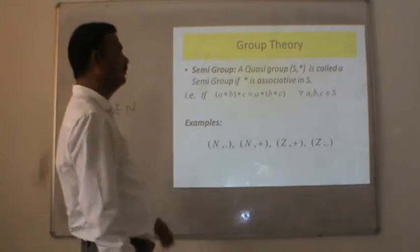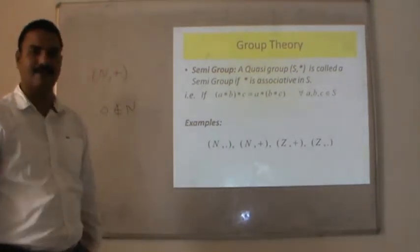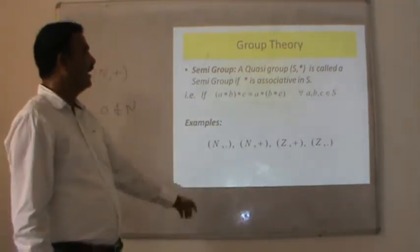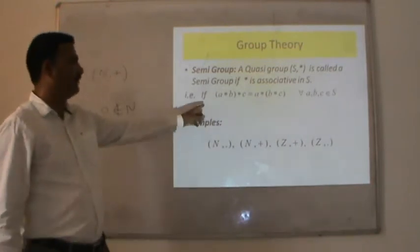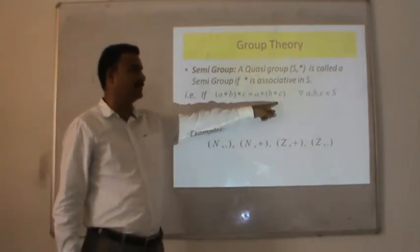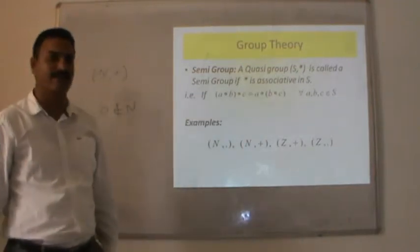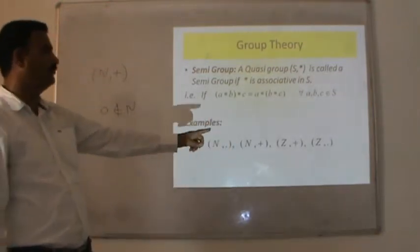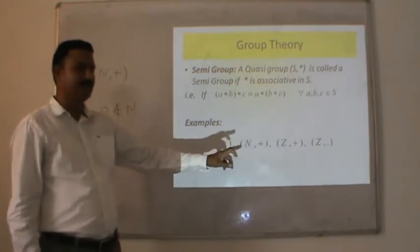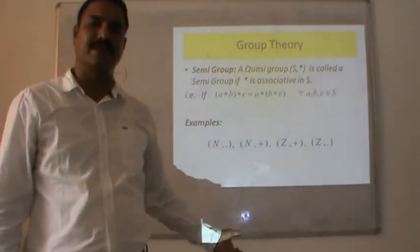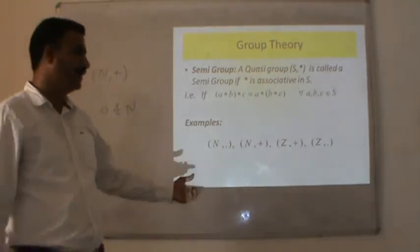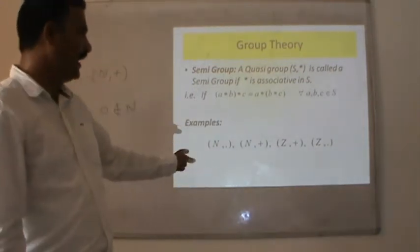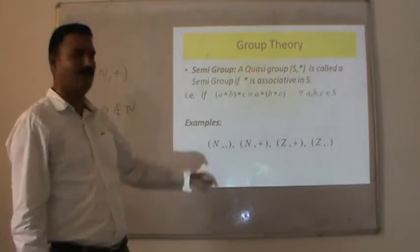Semi-group: a quasi-group (S, *) is a semi-group if * is associative on S, i.e., (a * b) * c = a * (b * c) for every three arbitrarily chosen elements of S. Examples include (N, ·), (N, +), (Z, +), and (Z, ·), since N and Z, being subsets of real numbers, also possess the associative property for addition and multiplication.